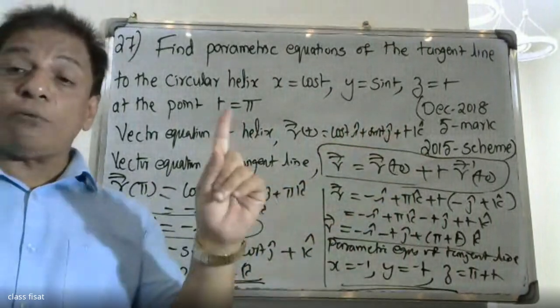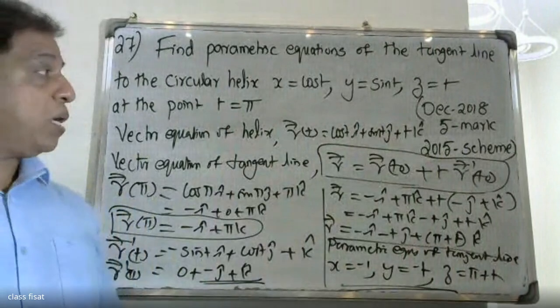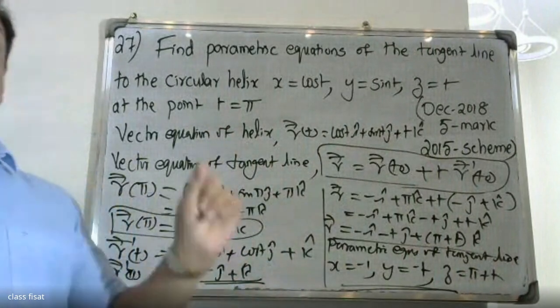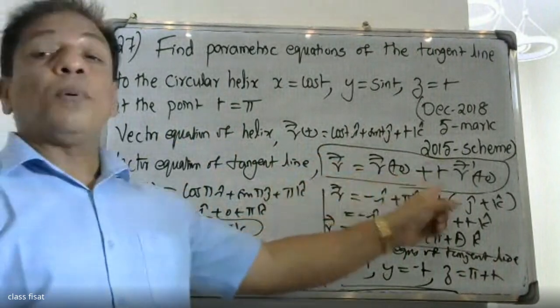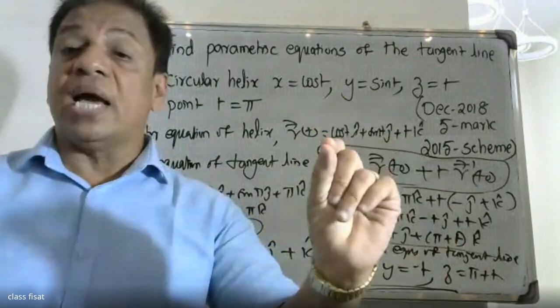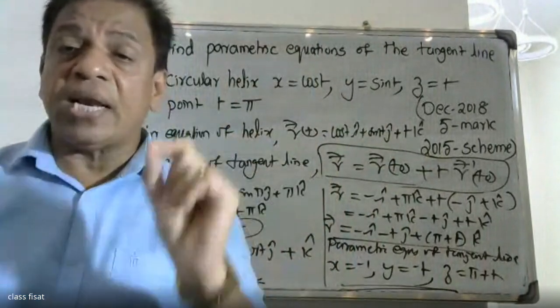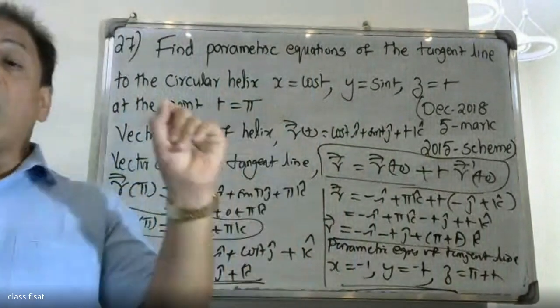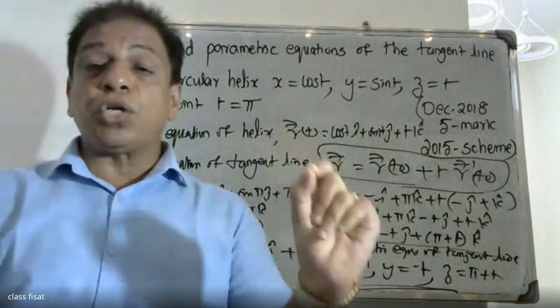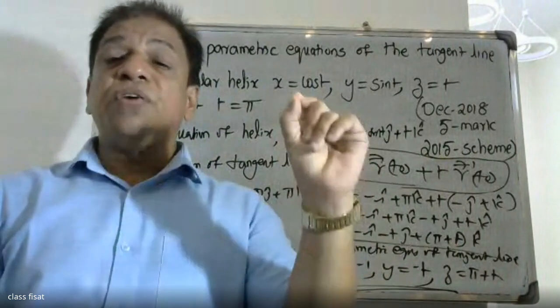Another question about orientation, the application of tangent line, with R equals R of T0 plus T into R dash T0.